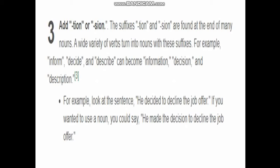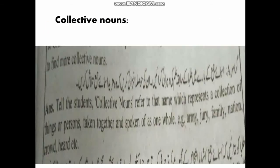Now let's look at collective nouns. A collective noun is a name that represents a collection of things or persons taken together and spoken of as one whole. Examples include army, jury, family, nation, crowd, and herd. The group name for a particular category is called a collective noun.